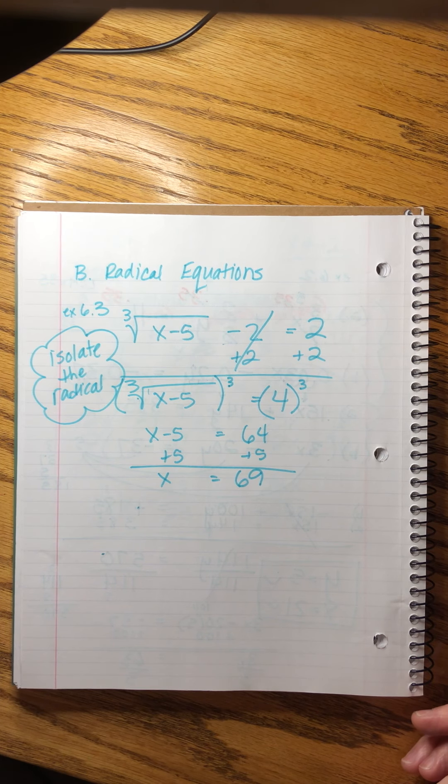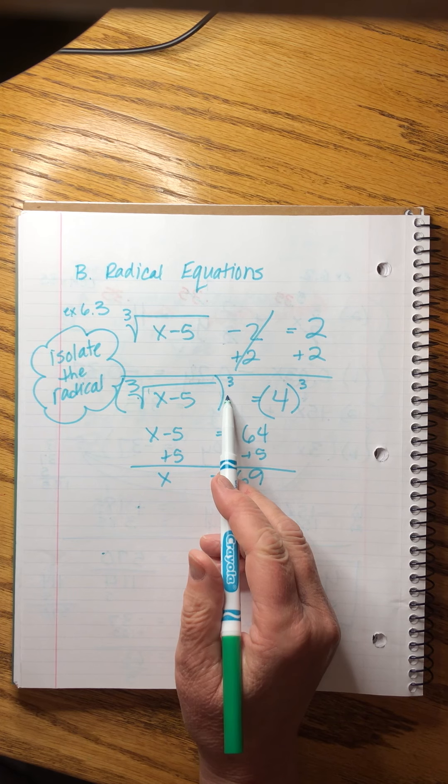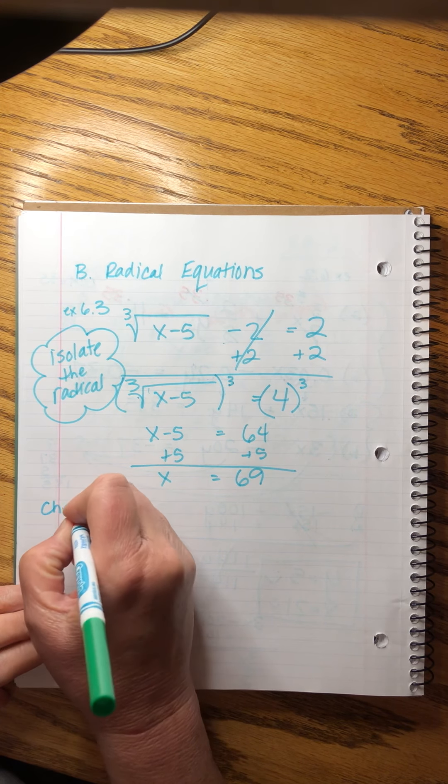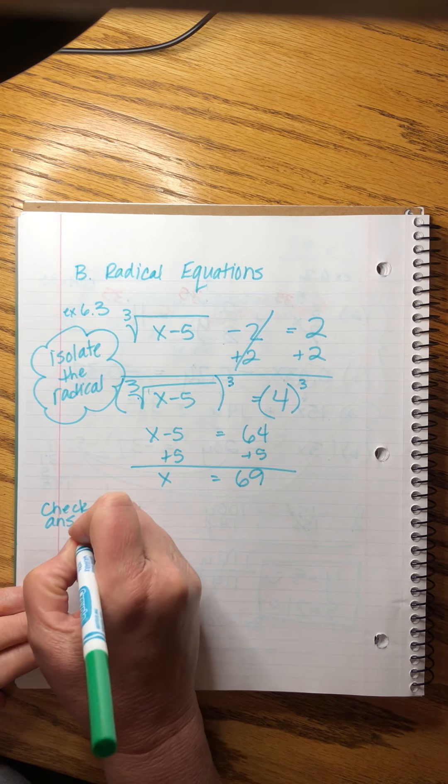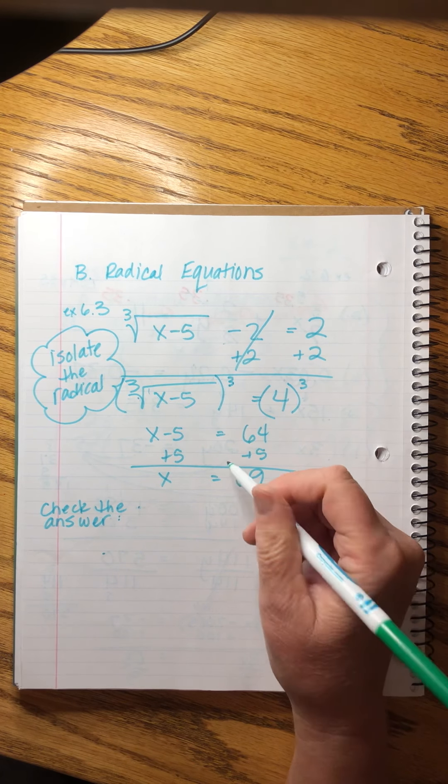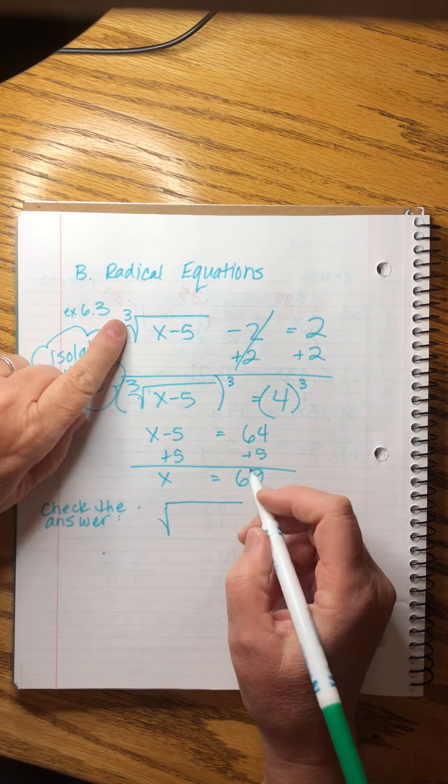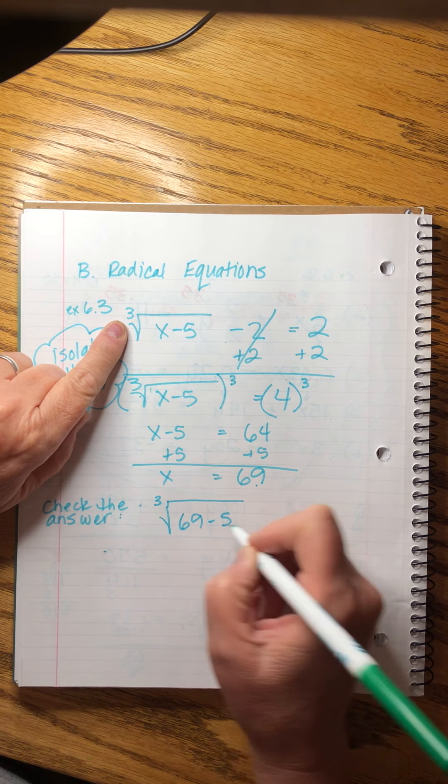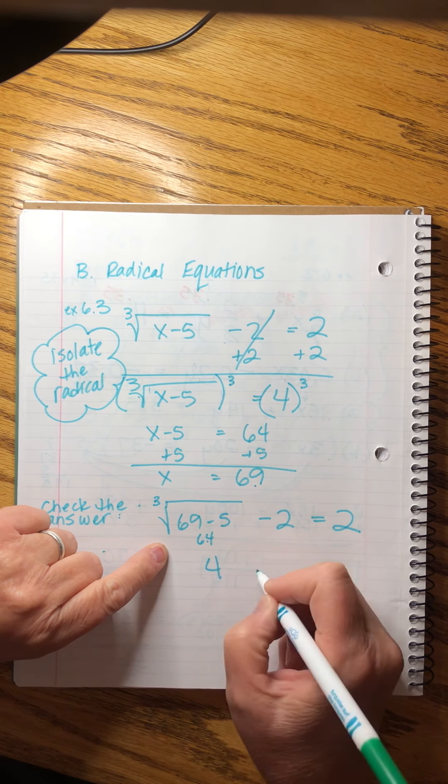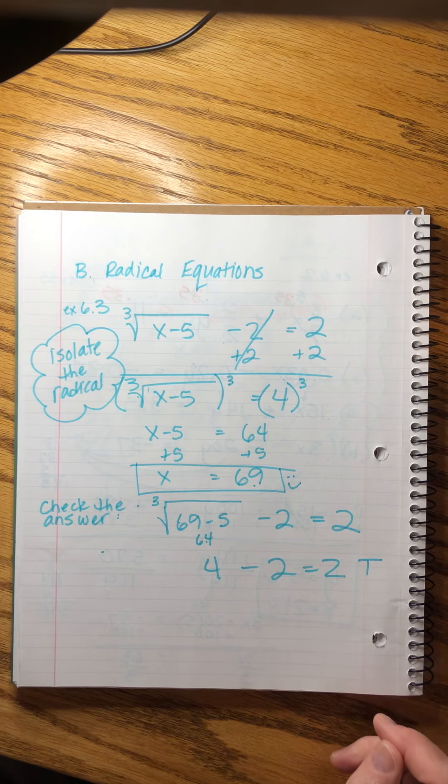Now, here's the thing about these. When we raise expressions to a power like this, we sometimes will get what are called false roots or extraneous solutions. So, whenever you're raising things to a power like that to cancel this out, you have to check your answer. I'm not a huge fan of checking my answer, but with these, you really do need to do it because it's easy to get wrong answers. And sometimes we do have to eliminate them. So, I'm going to put this back in here. I want the cube root of 69 minus 5. And if you subtract 2, will it equal 2? This is 64. The cube root of 64 is 4. 4 minus 2 equals 2. That's a check. So, that tells us that we have a good answer.